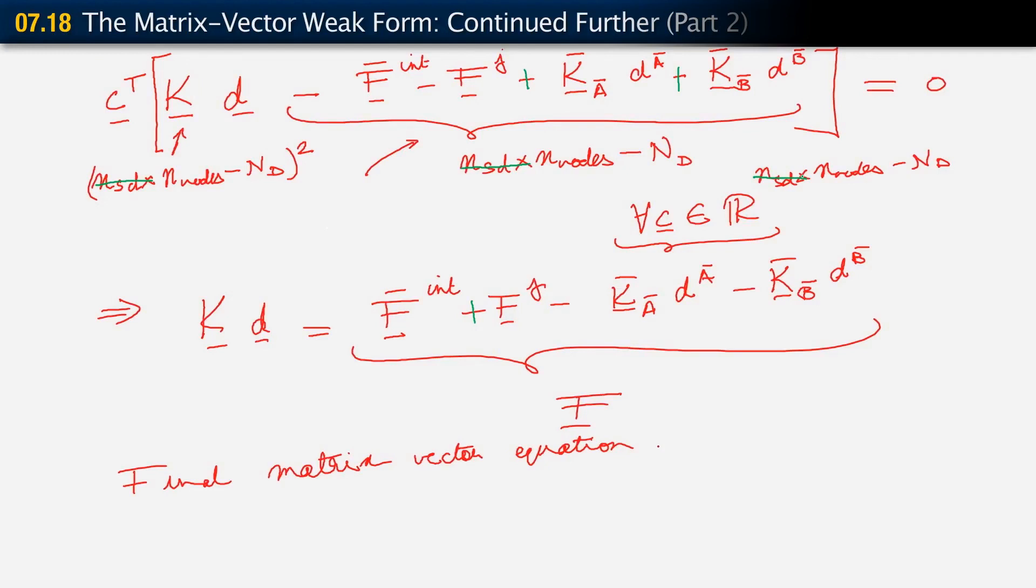The other thing to note and to remember is that here, when we talk about the number of nodes, N sub-nodes, that refers to the total number of nodes in the global mesh. So that's a global number of nodes in the problem. With that, this should work.